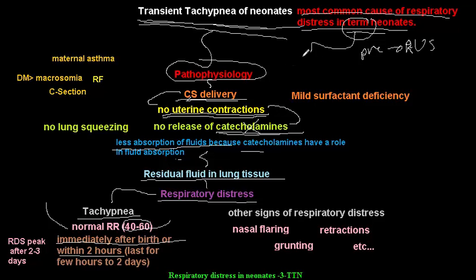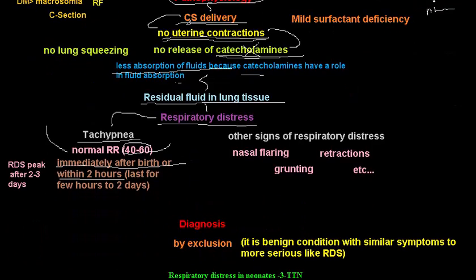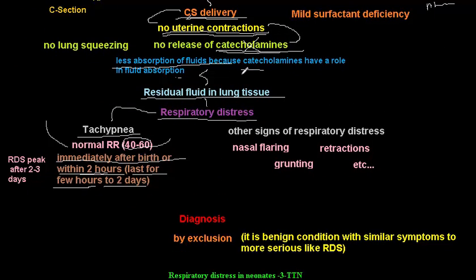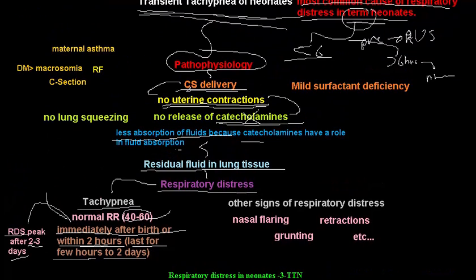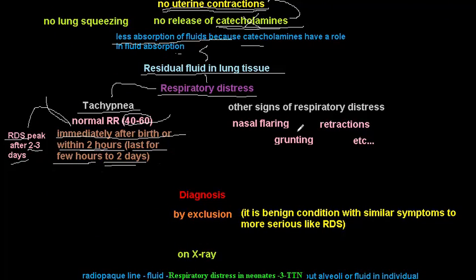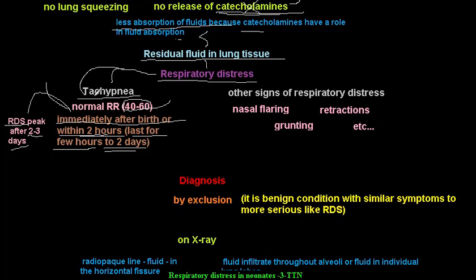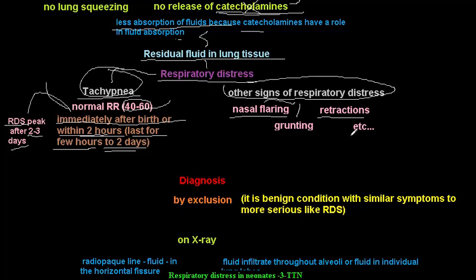Transient tachypnea of the neonate presents in less than six hours — within about two hours. If it presents more than six hours after birth, then we think about pneumonia, congenital pneumonia. The disease lasts only a few hours to two days. This is one difference from respiratory distress syndrome, where the peak presentation is on day two to three. In TTN the issue resolves by the second day in most cases. Other presentations include signs of respiratory distress such as nasal flaring, grunting, retractions, and so on.